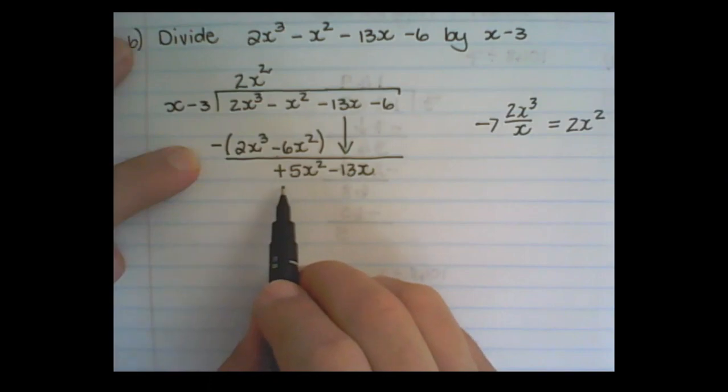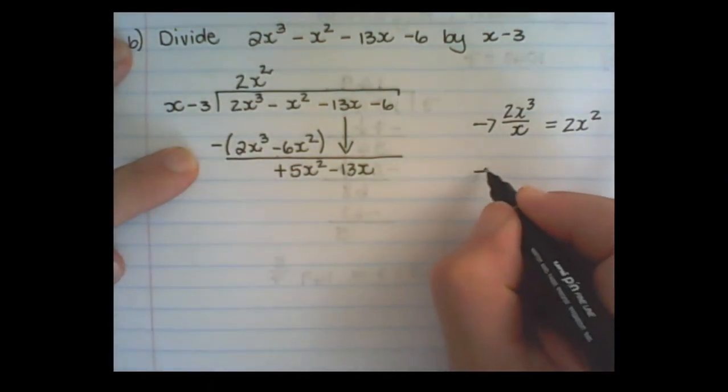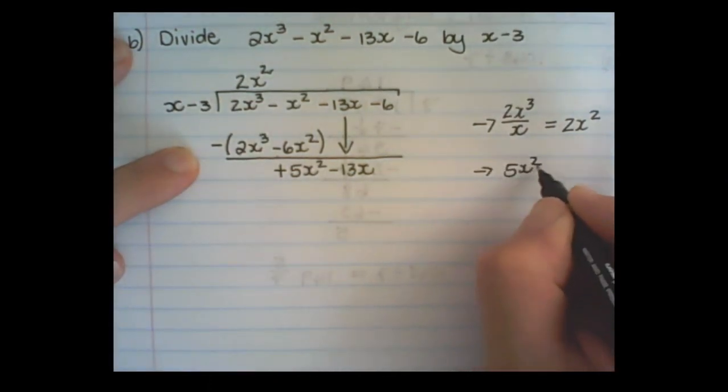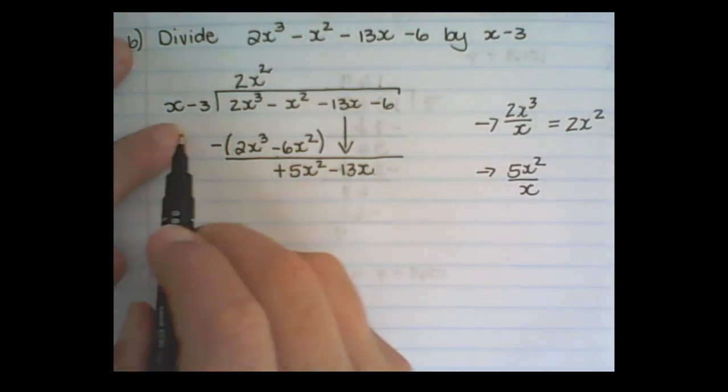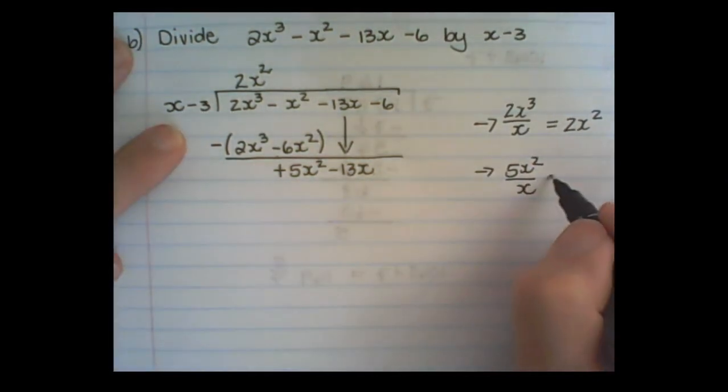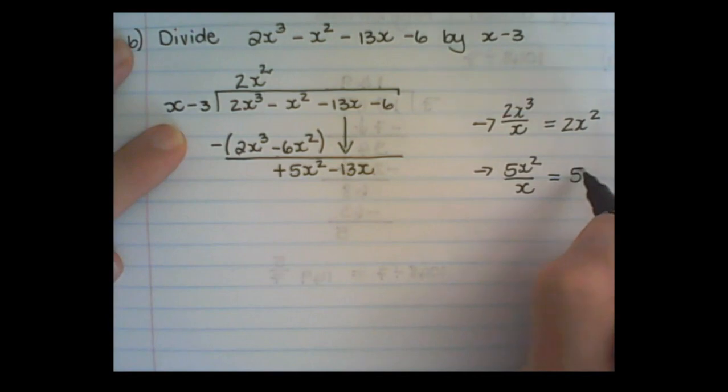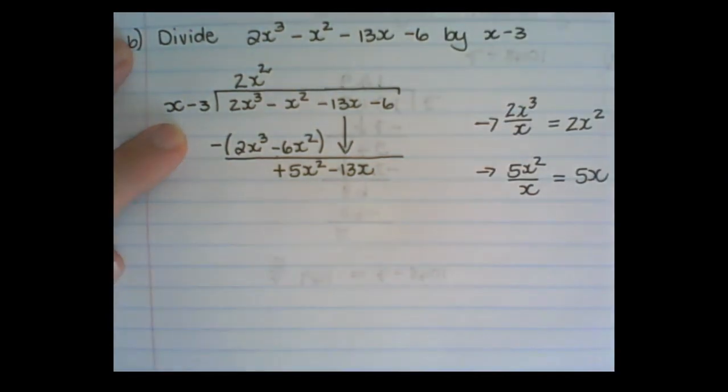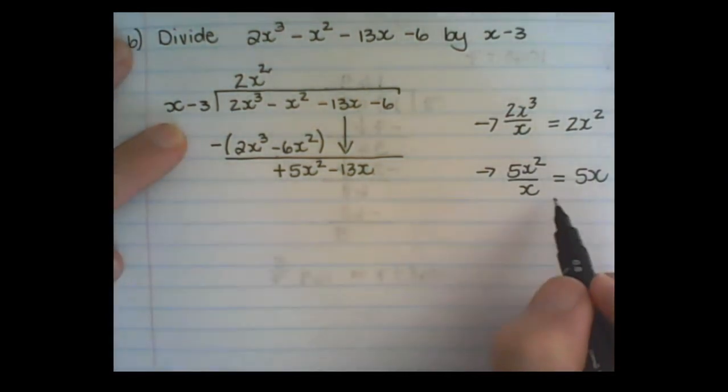Now in this line, I divide 5x squared with x. So only the first term. That will become 5x. It's a positive value. So it is plus 5x.